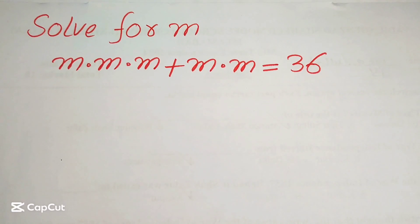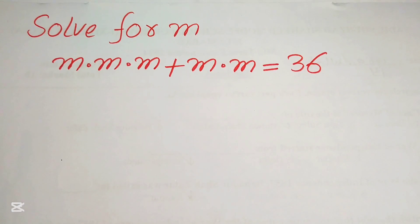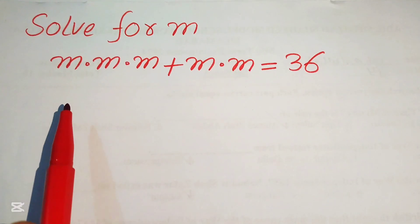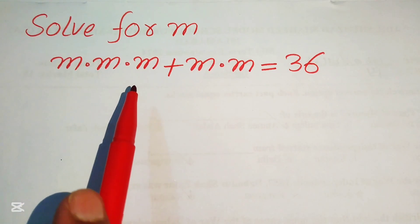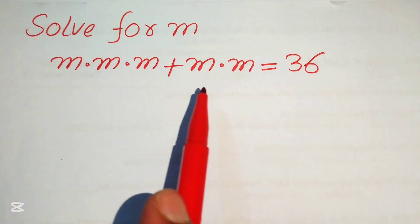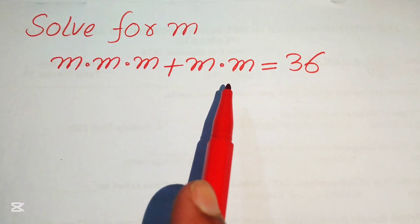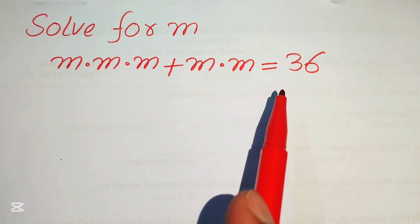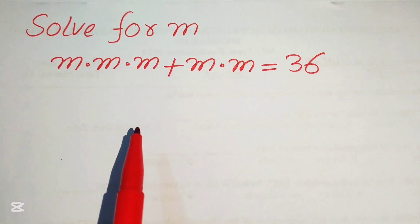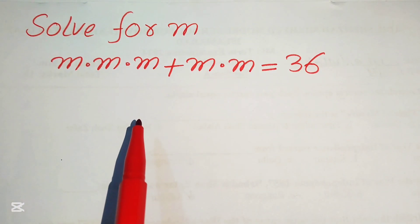Hello everyone, welcome to solve this nice math Olympiad algebra problem. Here we have m times m times m plus m times m equals to 36, and we solve this problem for the values of m.